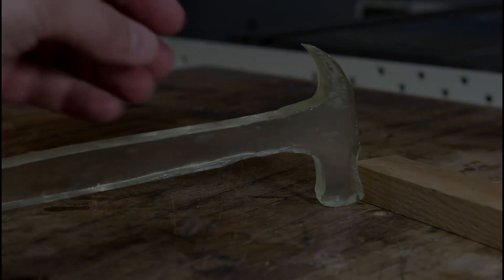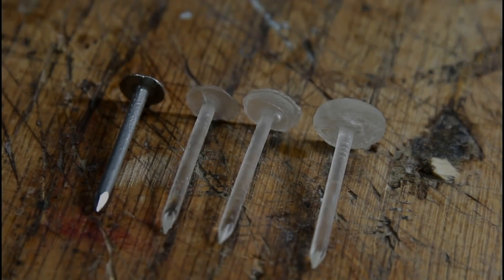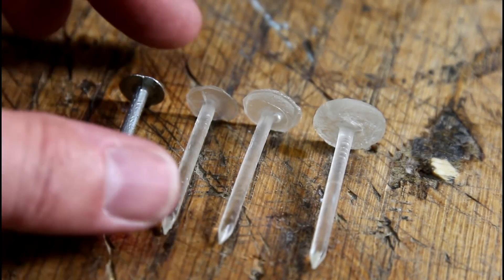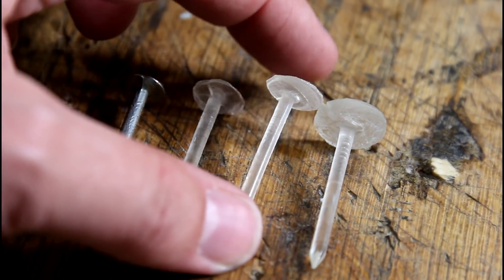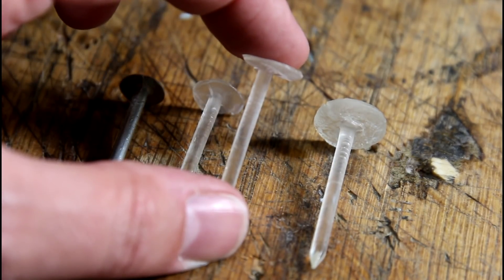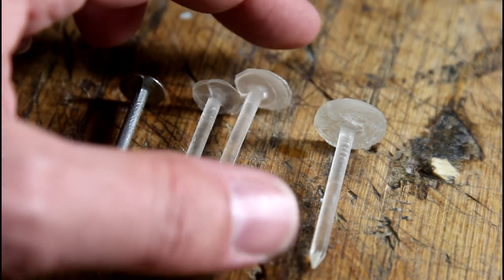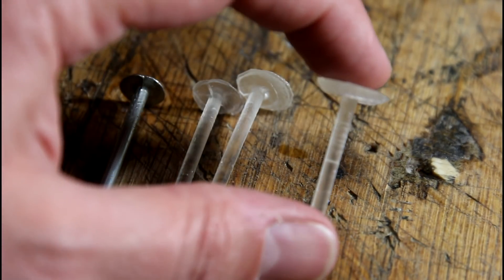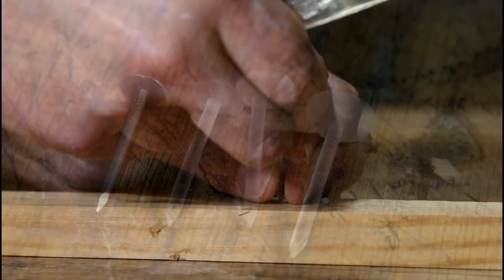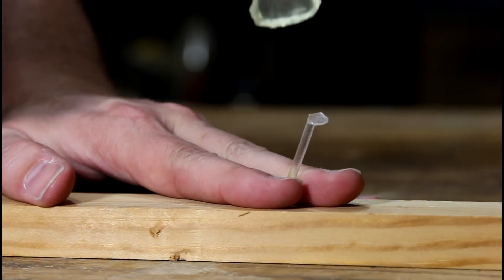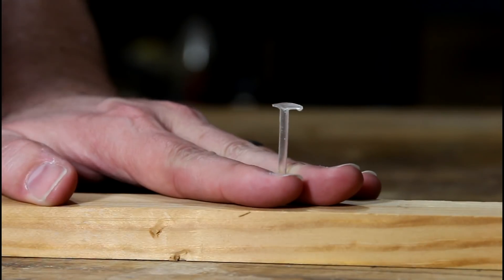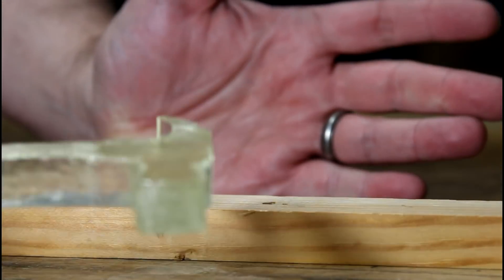So there's our original nail and three copies. And this one you can see has a pretty standard head. And then these two other ones have sort of this abomination head, which I'm hoping will give it a little bit more strength. And we'll see if we even get past the first whack here. And it shattered.